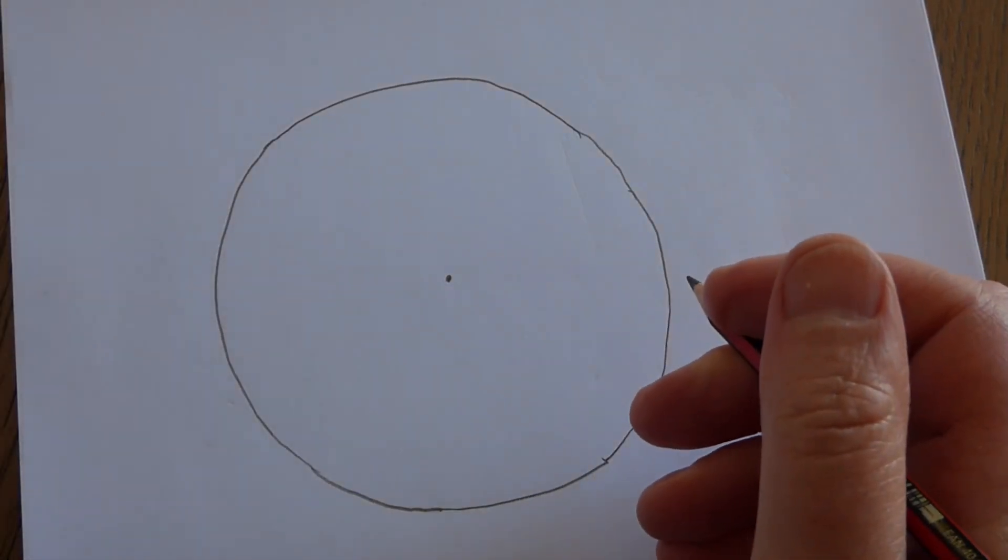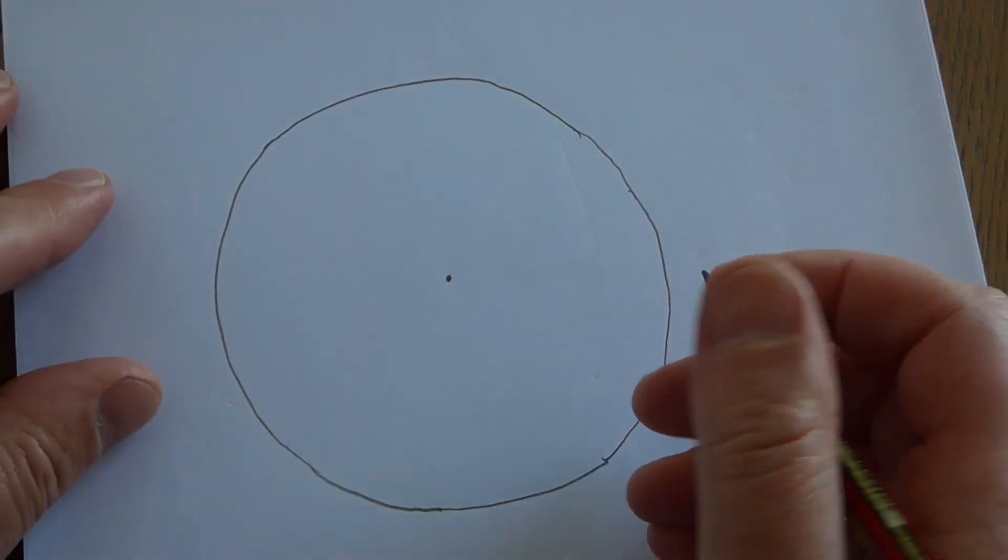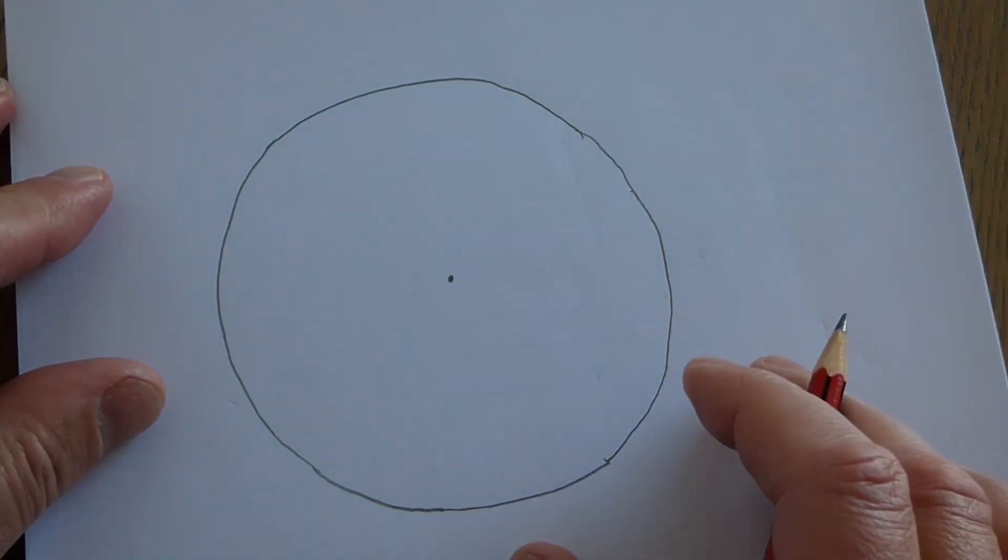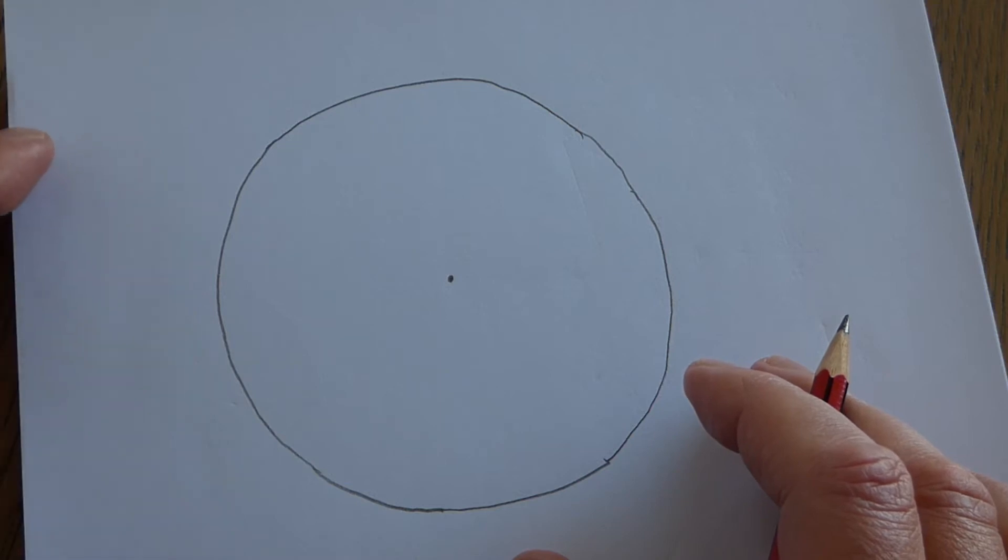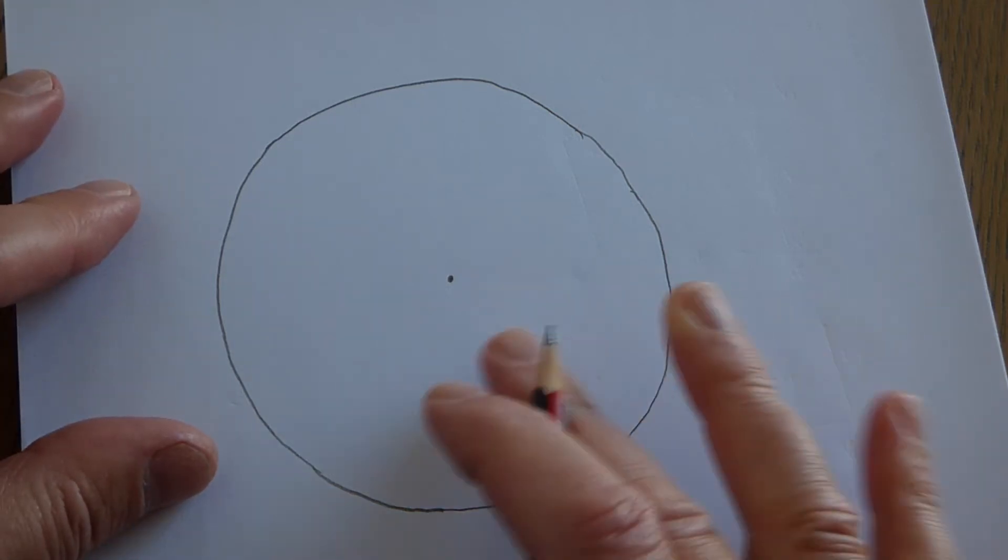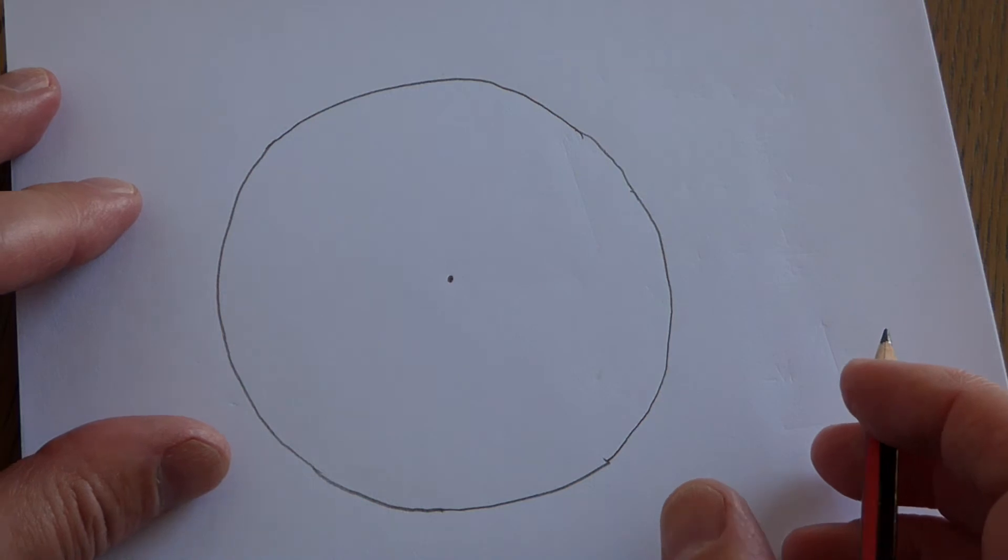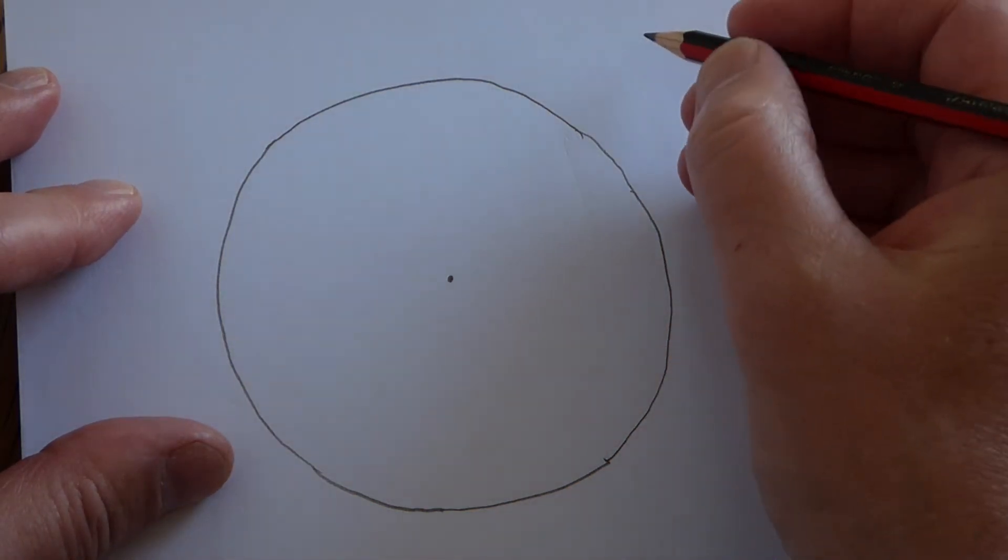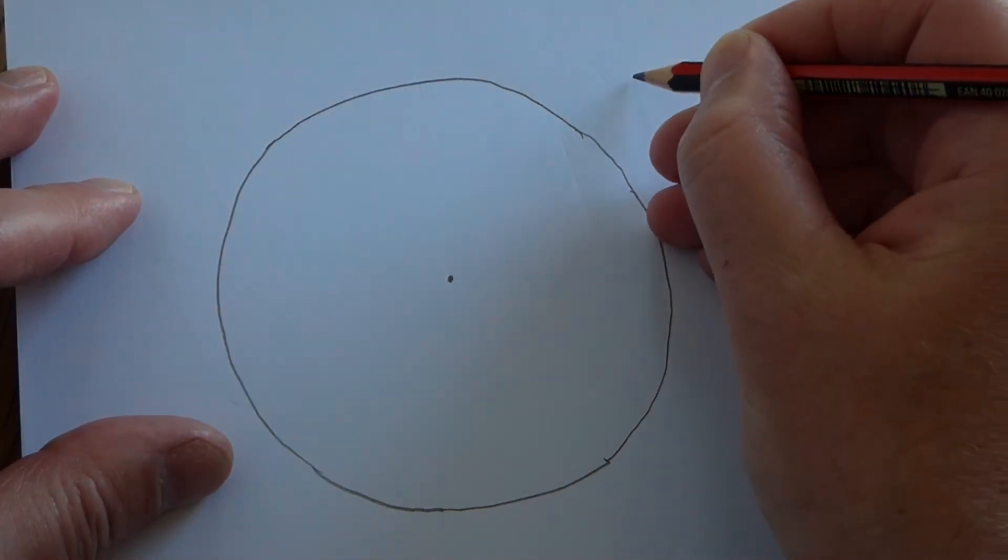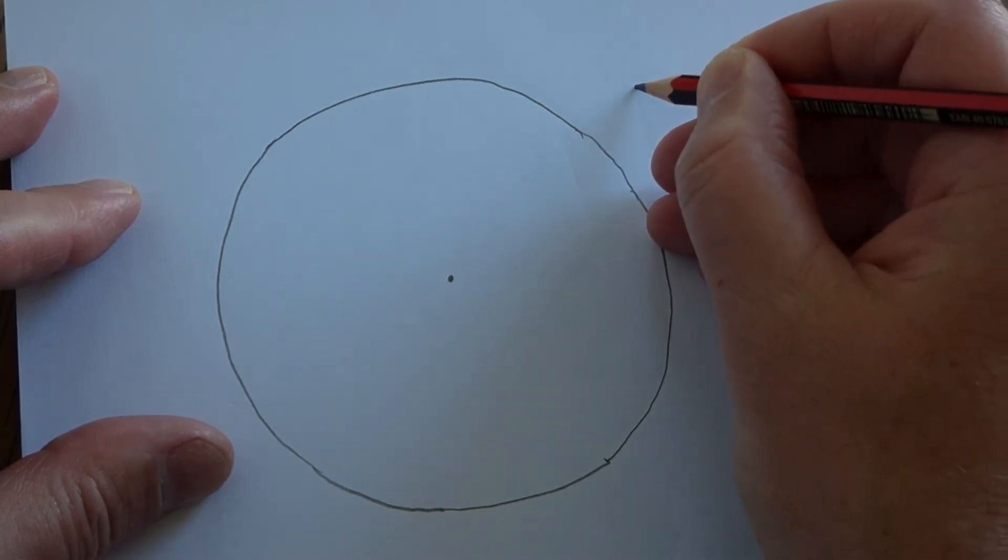When we deal with circular motion, we're going to introduce a new quantity, one that we've not come across before, and it's to make the mathematics involved with circular motion a little bit easier. We're going to define a quantity known as angular velocity.